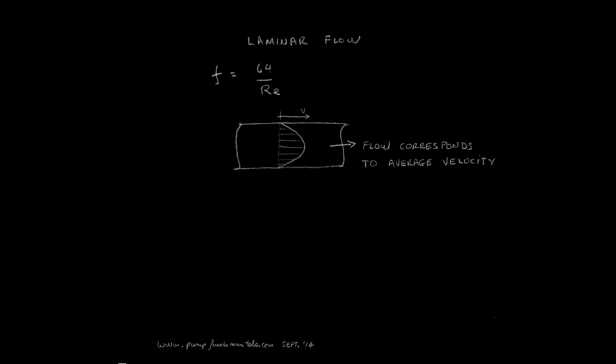The laminar flow equation gives the friction parameter for laminar flow. Laminar flow occurs for Reynolds numbers less than 2,000. Between 2,000 and 4,000 the flow is unstable, and 4,000 and up is the turbulent region.